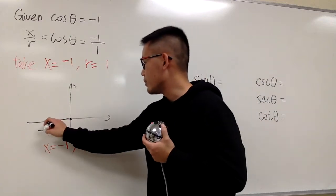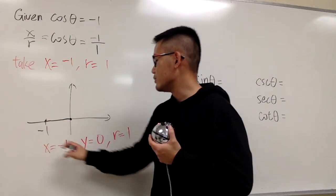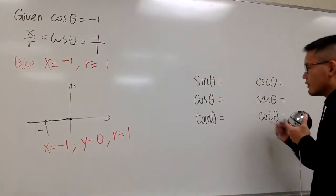So this right here was the point negative 1, 0. And now we can finish this.